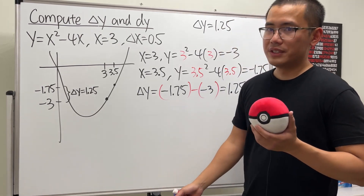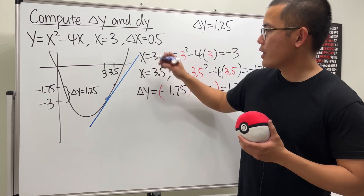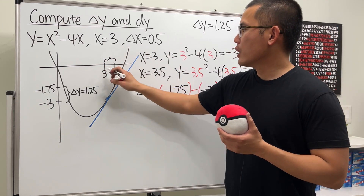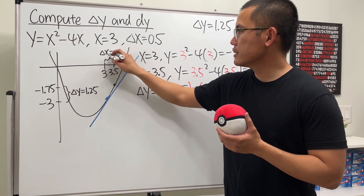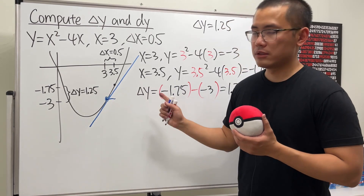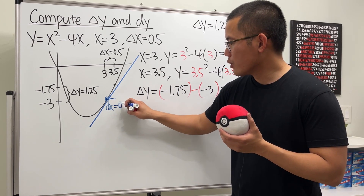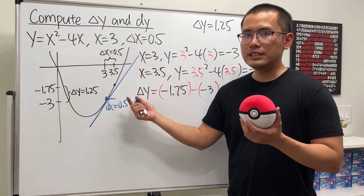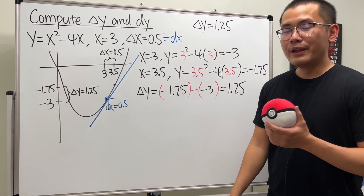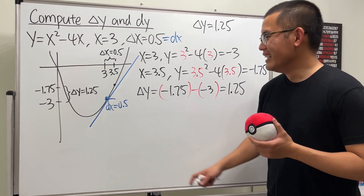To compute dy, we use the derivative, which is the slope of the tangent line. Let's draw a tangent line at our point. The horizontal movement along the tangent line is dx. We went from x = 3 to x = 3.5, a change of 0.5, so dx = 0.5 — the same as Δx. Hopefully Δx isn't a crazy number like √2 or 1/π; 0.5 is perfect.